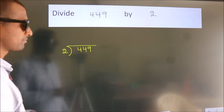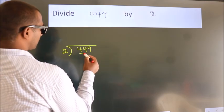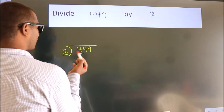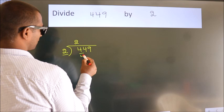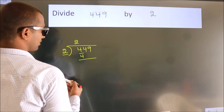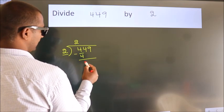Next. Here we have 4, here 2. When do we get 4? In the 2 table: 2 twos are 4. Now we should subtract. We get 0.